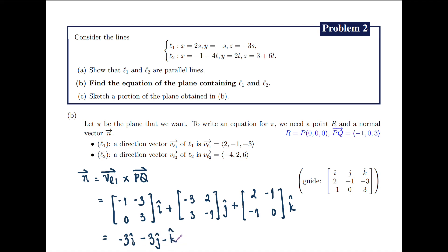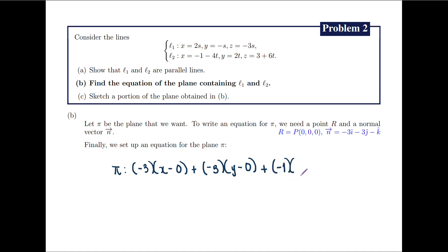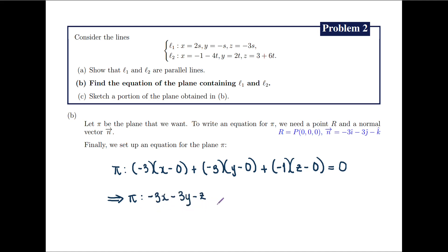Finally, we set up an equation for pi. Pi is given by the equation: the x-coordinate of N, which is negative 3, times (x minus the x-coordinate of R, which is 0), plus the y-coordinate of N, which is negative 3, times (y minus the y-coordinate of R, which is 0), plus the z-coordinate of N, which is negative 1, times (z minus the z-coordinate of R, which is 0), equals 0. Simplifying, we get negative 3x minus 3y minus z equals 0. Finally, we multiply both sides by negative 1 to get 3x plus 3y plus z equals 0.